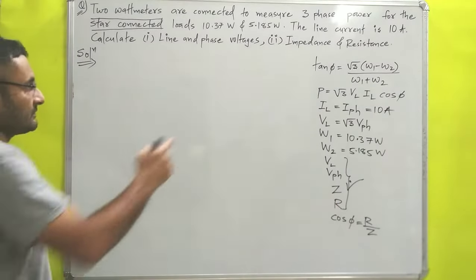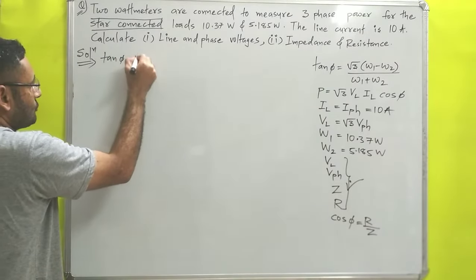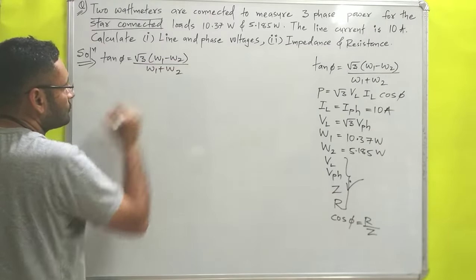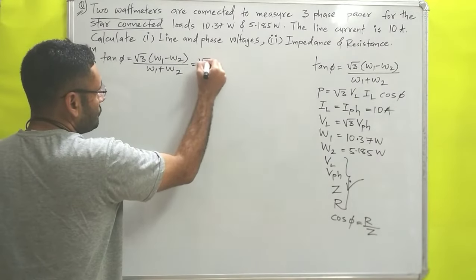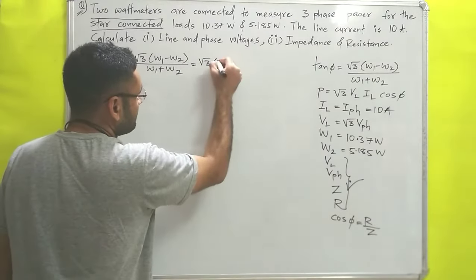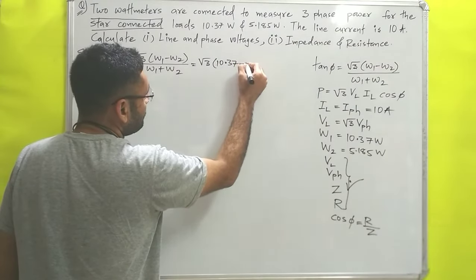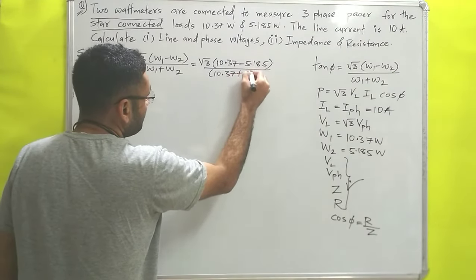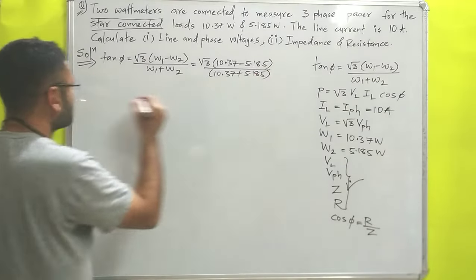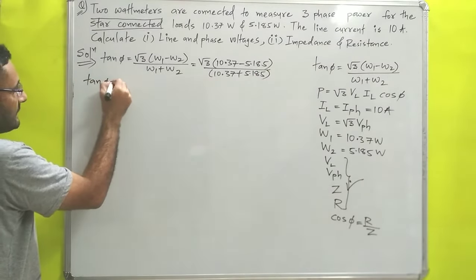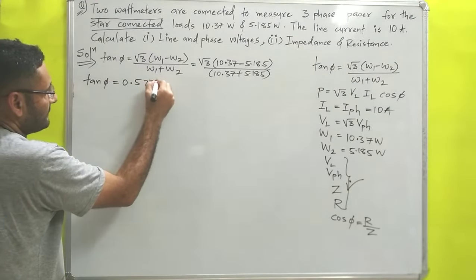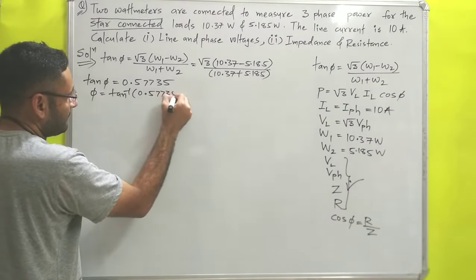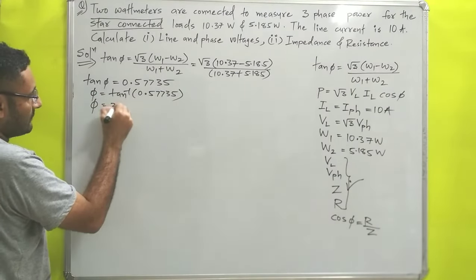First we will use the equation tan φ = √3 × (W1 − W2) / (W1 + W2). Substituting: tan φ = √3 × (10.37 − 5.185) / (10.37 + 5.185). Solving this gives tan φ = 0.57735. Taking tan inverse of 0.57735, the answer is φ = 30°.